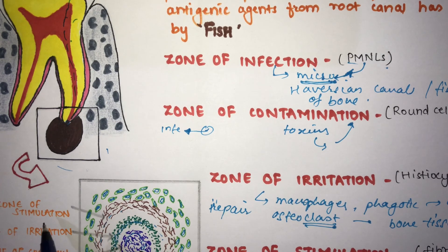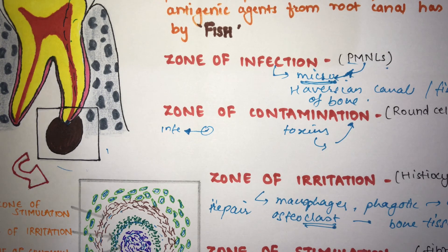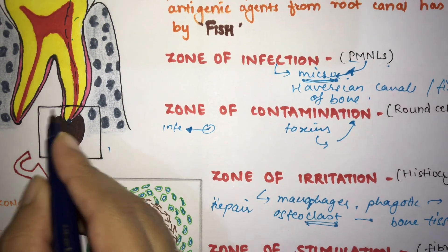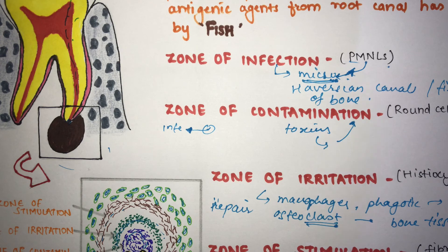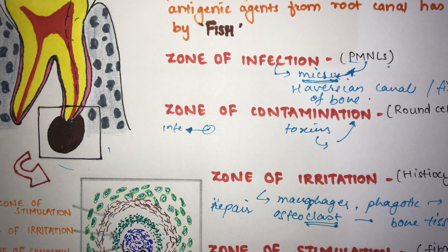In the zone of stimulation, collagen fibers and bone are formed. But if the cell rests of Malassez are also present and stimulated, a cyst forms. This is how the body reacts to microorganisms, bacteria, and toxins, leading to the formation of an abscess, granuloma, or cyst.